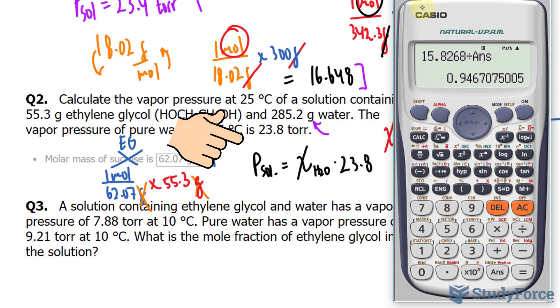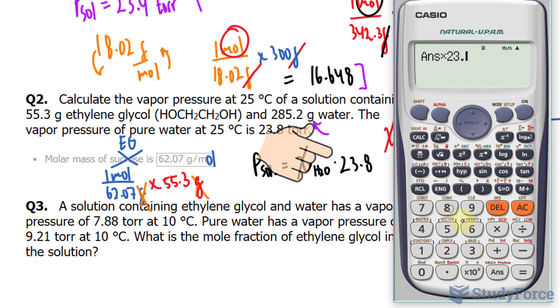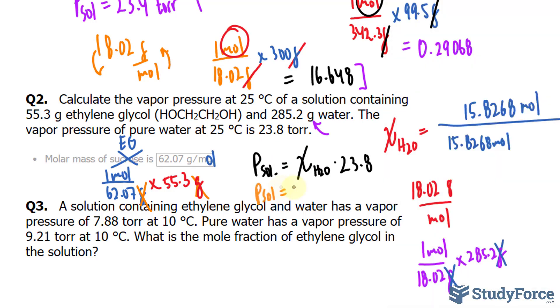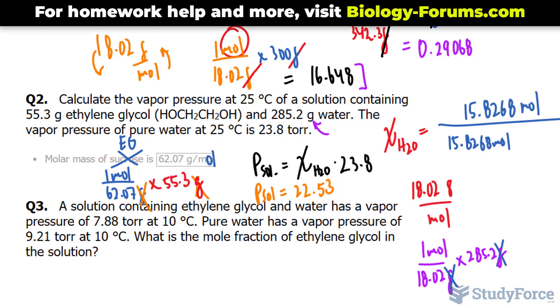This is the formula that we have to use to find the pressure of the solution. So, I take this number now and multiply it by 23.8. This gives us a new pressure of the solution at 22.53, and round it to three significant figures.